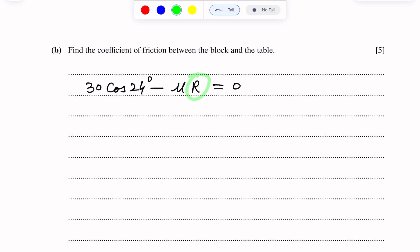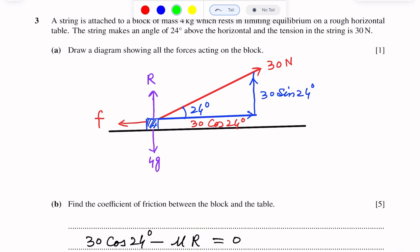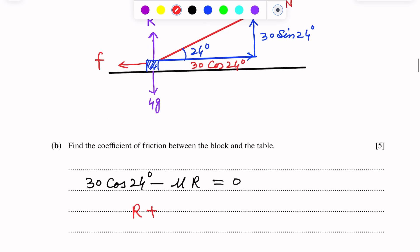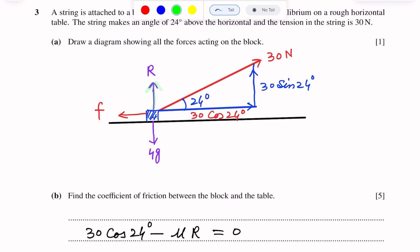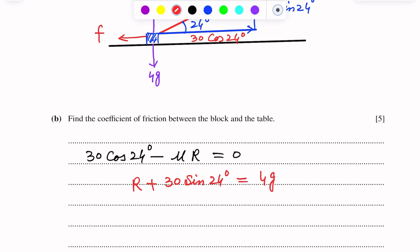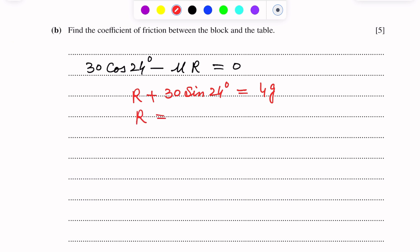First we will find the value of R, the normal reaction. Since the system is in limiting equilibrium, the sum of the upward forces equals the downward forces. R plus the vertical component of the 30 Newton force, which is also acting vertically upward, together equal 4G acting vertically downward. So R plus 30 sin 24 degrees equals 4G, giving R equals 4G minus 30 sin 24 degrees.